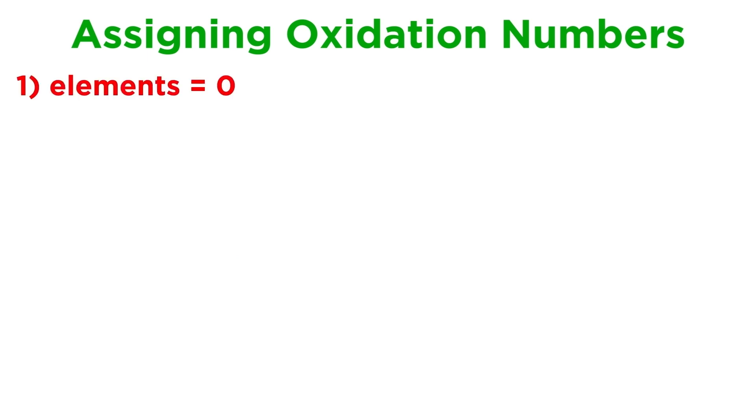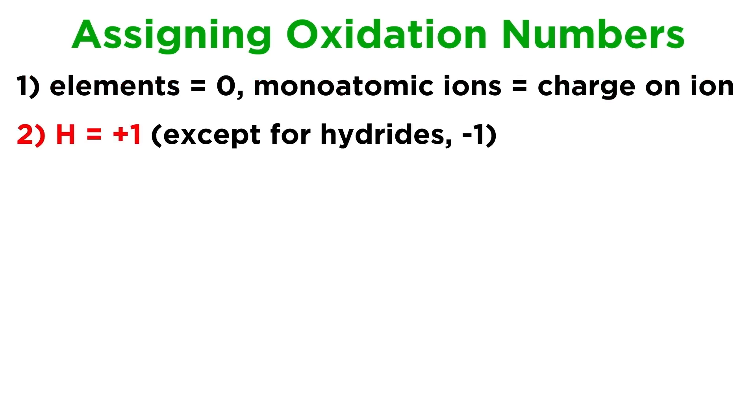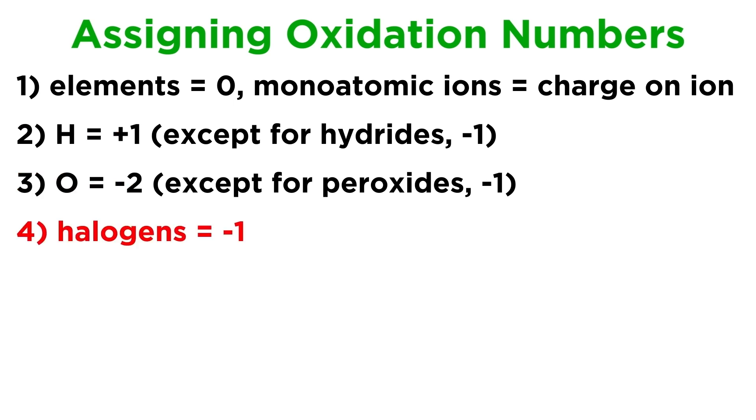Here are the rules for assigning oxidation numbers. 1. Elements have oxidation numbers of zero, while monoatomic ions have oxidation numbers equal to their formal charge. 2. Hydrogen is typically plus one, except in hydrides where it is minus one. 3. Oxygen is typically minus two, except in peroxides where it is minus one.